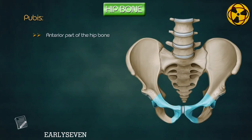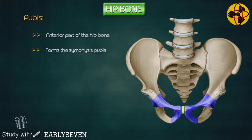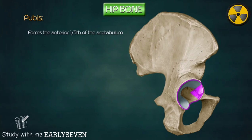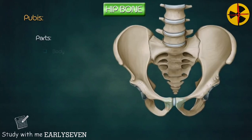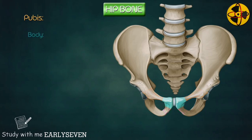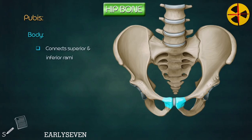Pubis. It forms the anterior part of the hip bone and articulates with the opposite bone forming the symphysis pubis. It also forms the anterior one-fifth of the acetabulum. Parts: body, superior ramus, and inferior ramus. The body connects the superior and inferior rami. It has three surfaces, one border — the pubic crest — and the pubic tubercle.